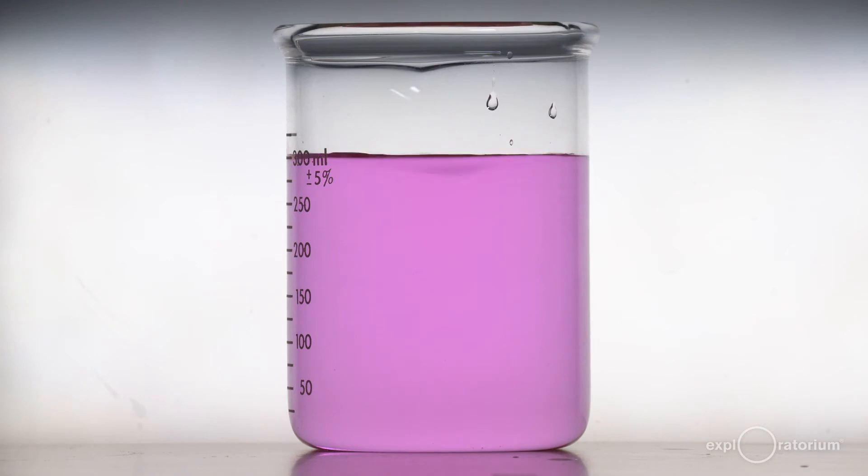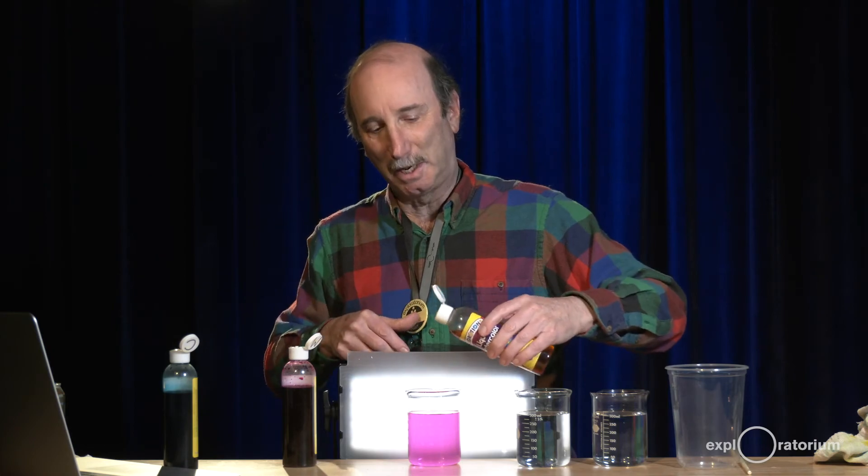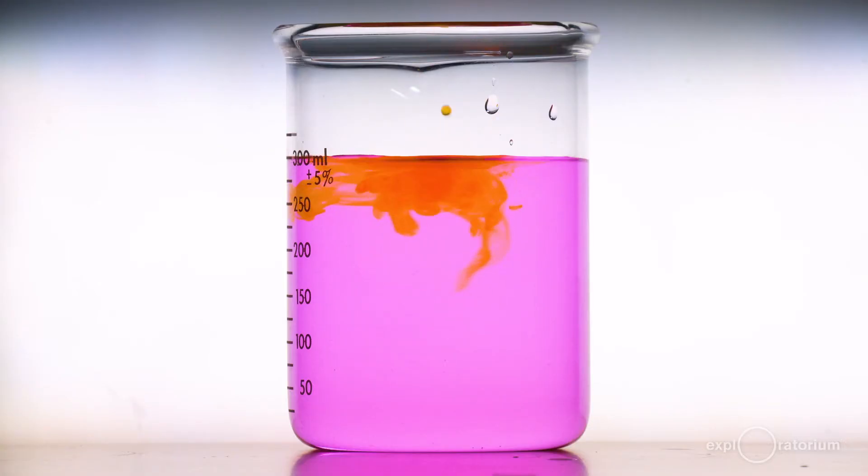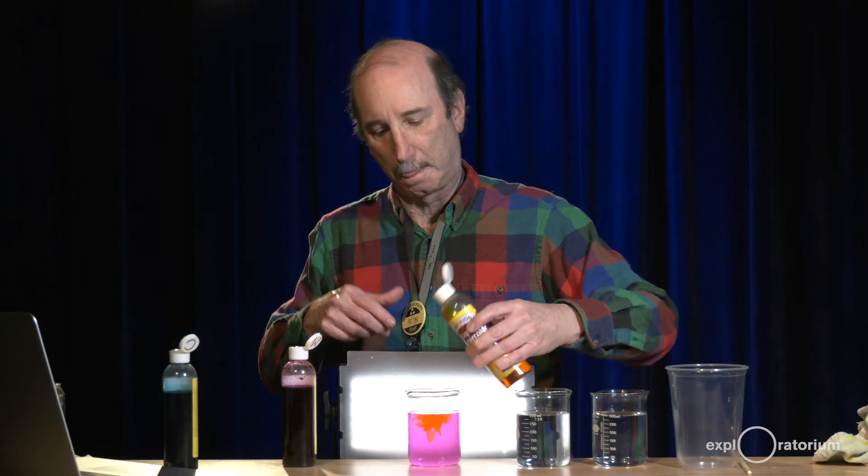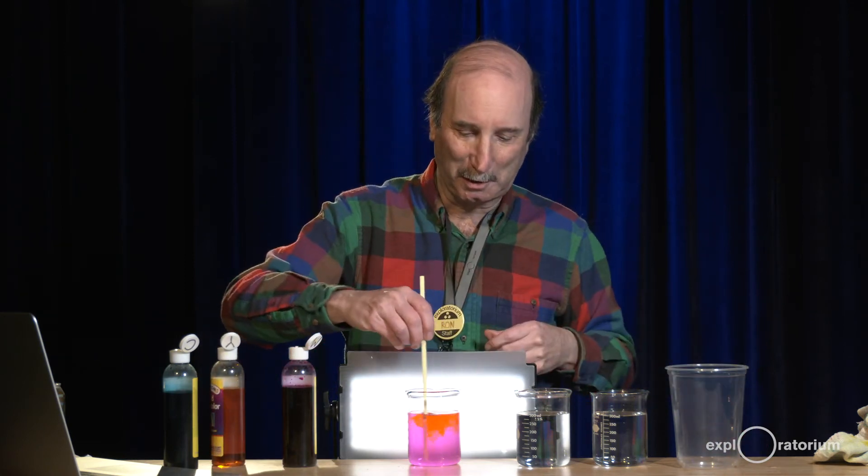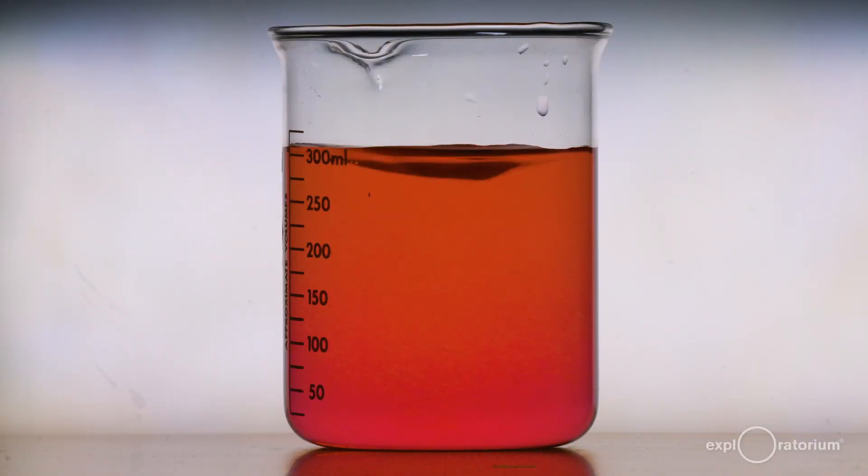And now let's add yellow to that. Yellow takes blue away from white light. Remember we've already taken green away from white light. Now we're taking blue away from white light. Let's see what the result is. Okay, and now let's mix it together. I think you can already see what's going to happen. Magenta plus yellow gives us red because we've taken away green and we've taken away blue. The only thing left is red.